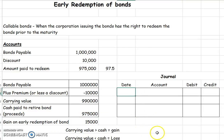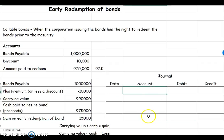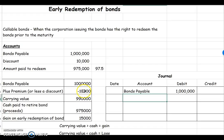You can also be asked to journalize the same thing. So if you are, then you're being asked to journalize the early redemption of your bond. You will debit bonds payable because after this transaction you no longer owe them any money. Then remember this over here was a discount, and a discount has a normal debit balance.